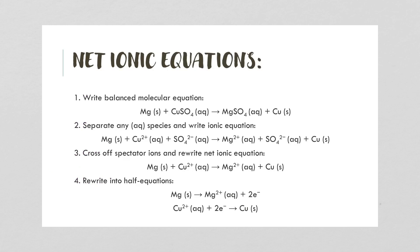Now we'll practice writing net ionic equations. First, write the balanced molecular equation: magnesium plus copper sulfate solution makes magnesium sulfate solution and copper. Second, separate the aqueous species into ions: Mg plus Cu²⁺ plus SO₄²⁻ makes Mg²⁺ plus SO₄²⁻ plus Cu. Third, cross off spectator ions — the sulfate appears on both sides, so we remove it. Rewrite the net ionic equation: Mg plus Cu²⁺ makes Mg²⁺ plus Cu. Finally, split into half equations: Mg → Mg²⁺ + 2e⁻ (oxidation) and Cu²⁺ + 2e⁻ → Cu (reduction).